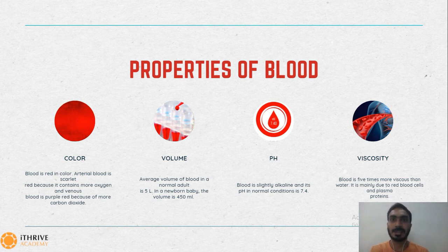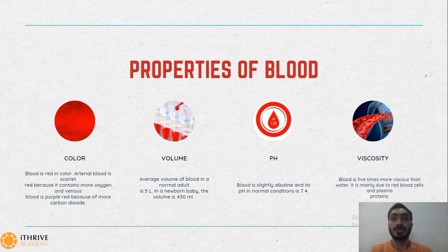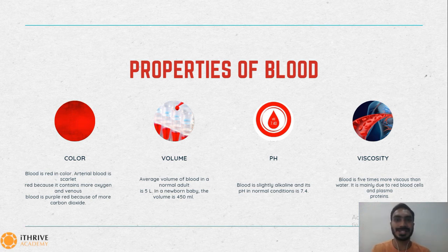The pH of blood: blood is slightly alkaline in nature. The normal pH of blood is 7.4. Viscosity means the thickness of any fluid. The viscosity of blood is 5 times more than that of water because of the presence of blood cells and the plasma proteins.